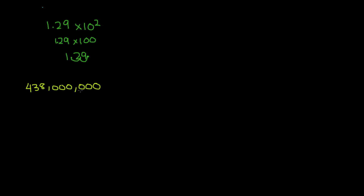The first thing we have to do is change this number into a decimal with only one digit to the left of the decimal point. Since this is a whole number, the decimal point is at the end, so we move it from right to left: 1, 2, 3, 4, 5, 6, 7, 8. We stop here because there is only one digit left of the decimal point. So we rewrite this as 4.38, and we keep the six zeros for now: 1, 2, 3, 4, 5, 6.